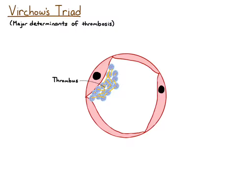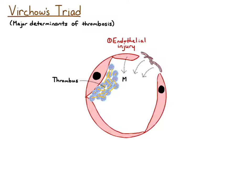This video is going to be on Virchow's triad, which are the three major determinants of thrombosis, or the three major determinants of thrombus formation. The first determinant is endothelial injury — injury to the endothelium — which results in exposure of the sub-endothelial collagen and release of coagulation and hemostasis mediators, as well as endothelial cells themselves releasing mediators of hemostasis.